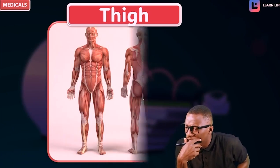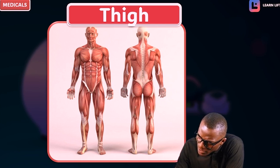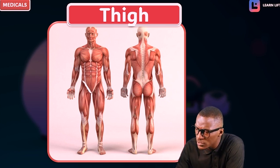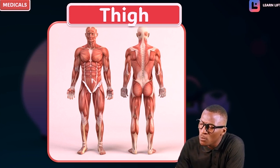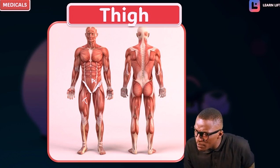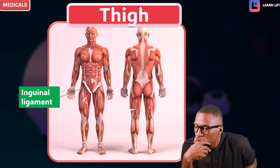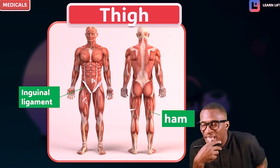Let's see that in the diagram. This is the abdominal region and this is the thigh. The part separating them we call the inguinal region, also called the groin. You can also see it here — this is the abdomen and this is the thigh. The part separating them is called the inguinal ligament. And this posterior aspect of the thigh is called the ham.